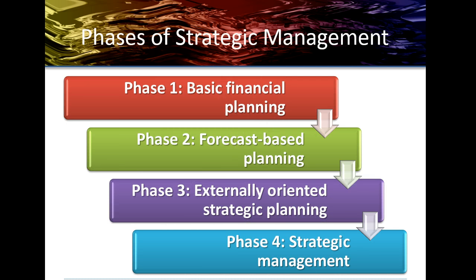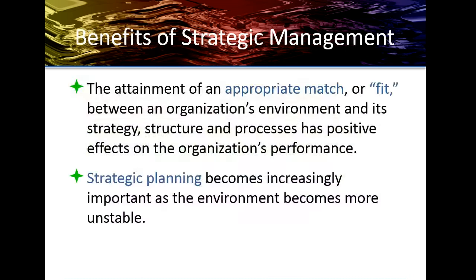Here are the four phases of strategic management. One is basic financial planning. Two, forecasting-based planning. Three, externally-oriented strategic planning. And four, strategic management. We'll talk more in depth about each of these phases in the following slide.